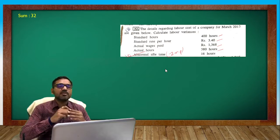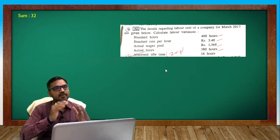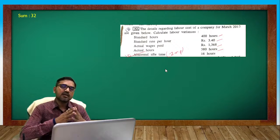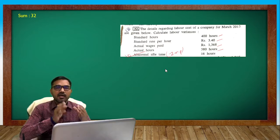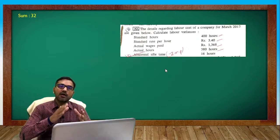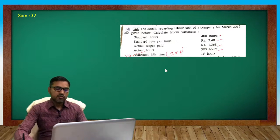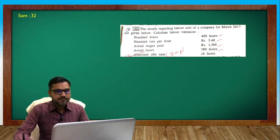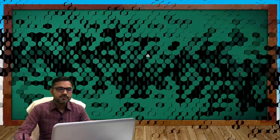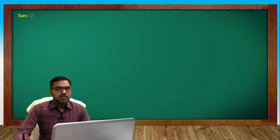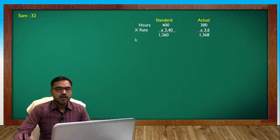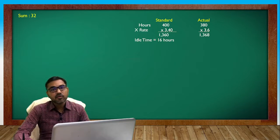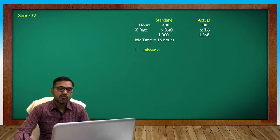Idle time and the payout amount value is idle time variance. Idle time into SR standard rate, always negative, always unfavorable. Rest is okay, just spend on calculation.